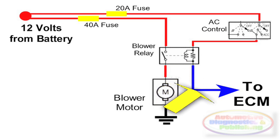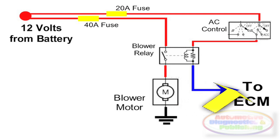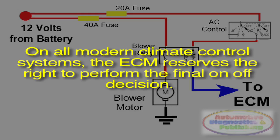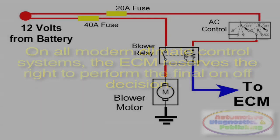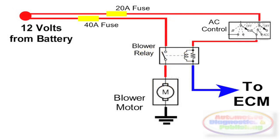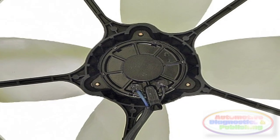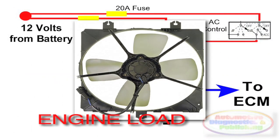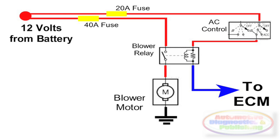Why is it done this way? On all modern climate control systems, the ECM reserves the right to perform the final on-off decision. This is due to the fact that the compressor clutch puts a power load on the engine. Whenever the refrigerant compressor turns on, so does the condenser fan. This means that during wide open throttle and certain other engine conditions, the ECM will keep the compressor and condenser fan off. This is the golden rule of automotive HVAC.